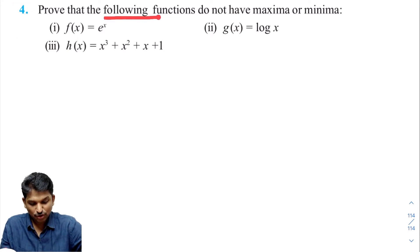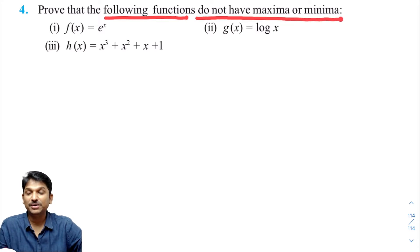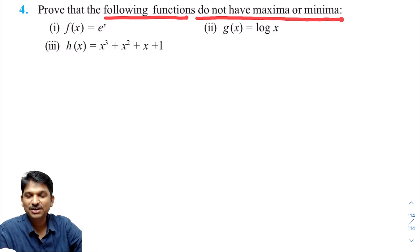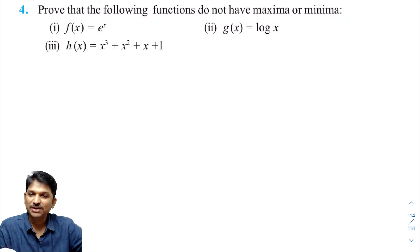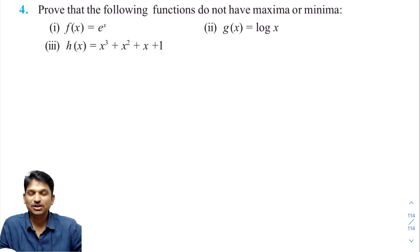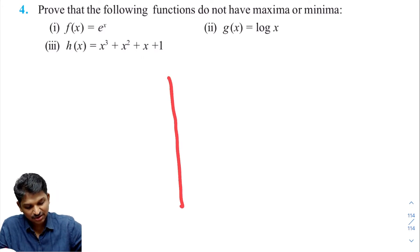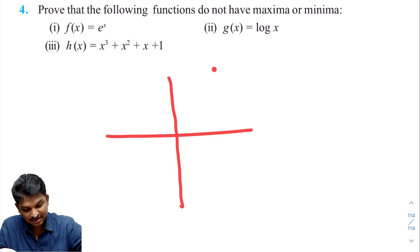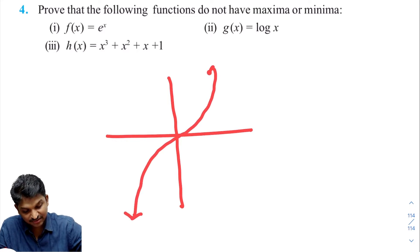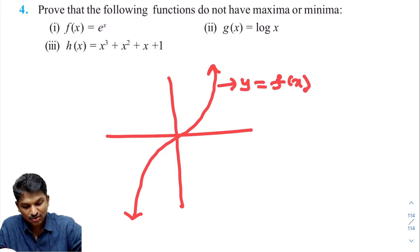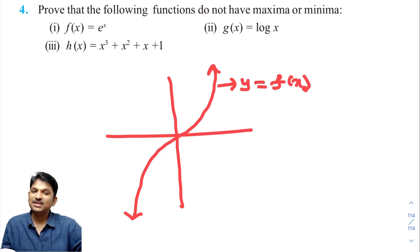Prove that the following functions do not have maxima or minima. When we say a function does not have a maximum or minimum value, consider a graph like this — suppose this is the graph of y = f(x). What is the maximum value of this function?